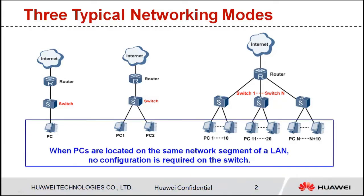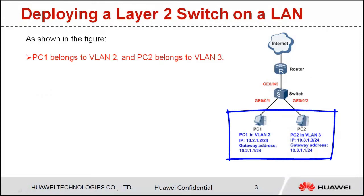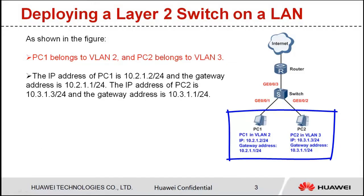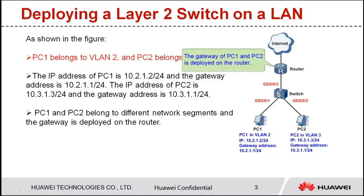If PCs are located on the same LAN, no configuration is required on the switch — the switch functions as a Layer 2 device. If PCs are located on different LANs, configurations need to be performed on the Layer 2 switch so that PCs can connect to the external network. As shown in the figure, PC1 belongs to VLAN 2 and PC2 belongs to VLAN 3. The IP address of PC1 is 10.2.1.2 and the gateway address is 10.2.1.1. The IP address of PC2 is 10.3.1.3 and the gateway address is 10.3.1.1. The gateways of PC1 and PC2 are deployed on the router.